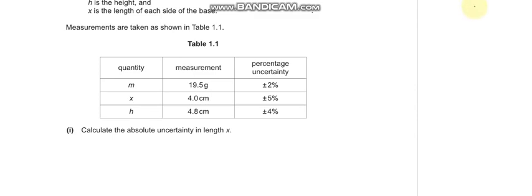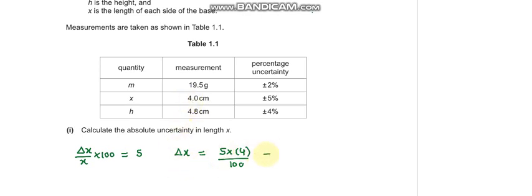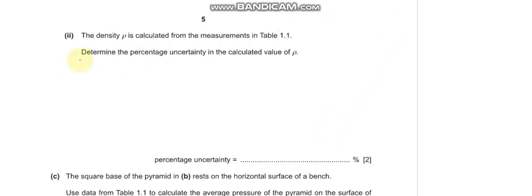We are given the fractional uncertainty in length x, so we can write up the formula and make the absolute uncertainty Δx the subject. From here, the value of x is given as 4 centimeters, so our absolute uncertainty Δx becomes ±0.2 centimeters.